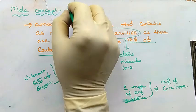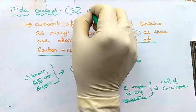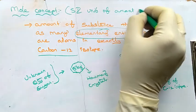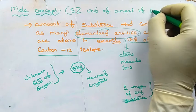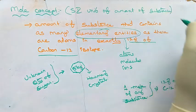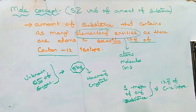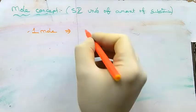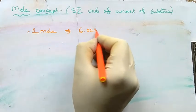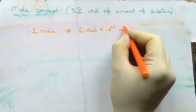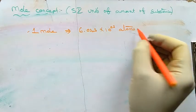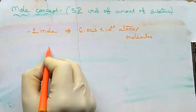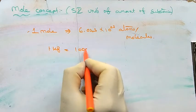Mole is also the SI unit of amount of substance. One mole is equal to 6.023 × 10²³, which means in one mole of any chemical substance, 6.023 × 10²³ atoms or molecules will be present.